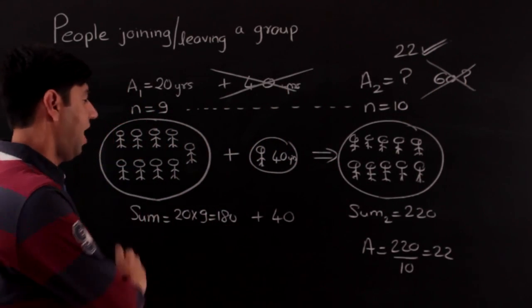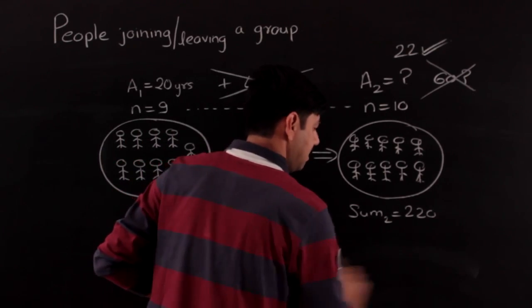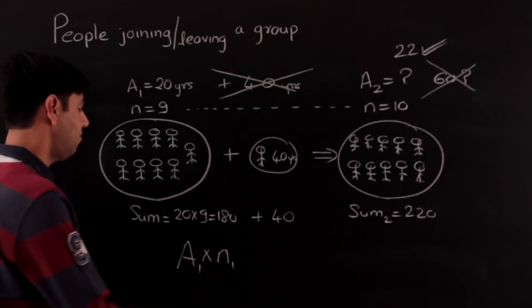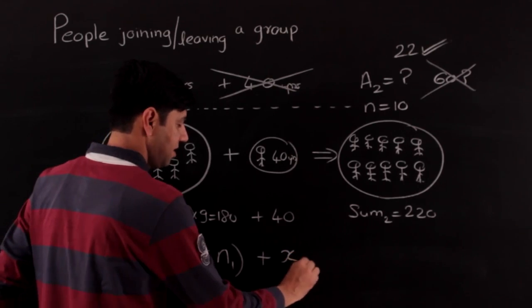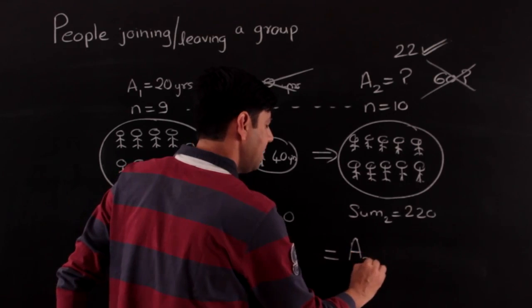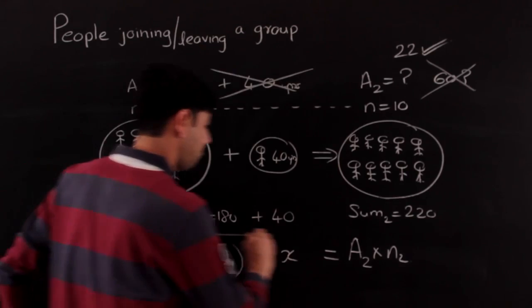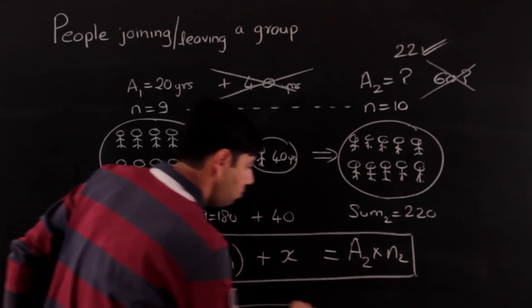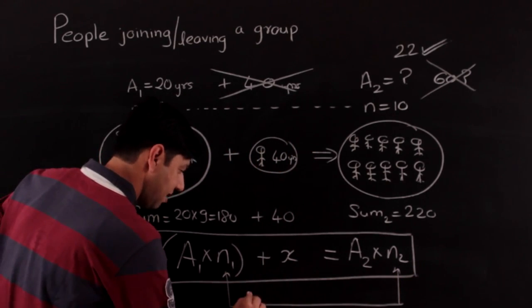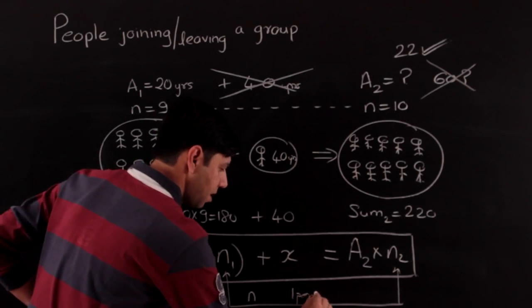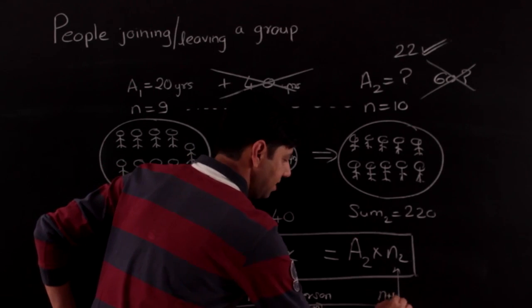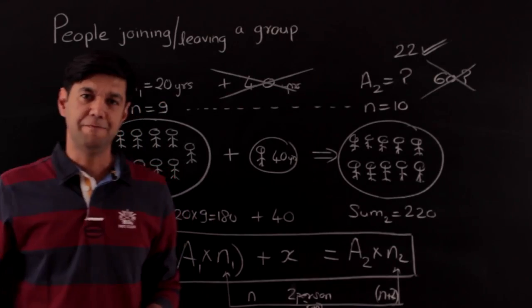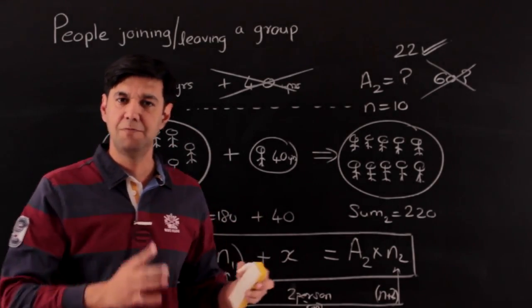We can generalize this: a1 × n1 is the original sum. Adding something to this sum gives a new sum expressed as a2 × n2. This is the formula we will use throughout. Note that n1 and n2 are related: if one person joins, n2 = n1 + 1; if two join, n2 = n1 + 2, and so on.